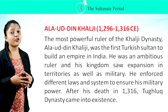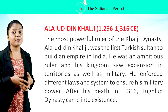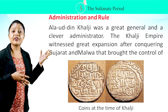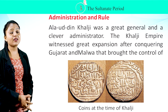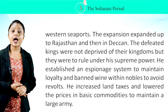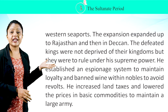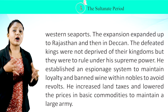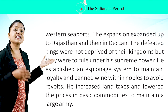Alauddin Khalji imposed different laws and systems to ensure his military power. He died in 1316, after which the Tughlaq Dynasty came into existence. Alauddin Khalji was a great general and a clever administrator. The Khalji Empire witnessed great expansion after conquering Gujarat and Malwa, bringing control of western seaports. The expansion extended to Rajasthan and the Deccan. Defeated kings were not deprived of their kingdoms but ruled under his supreme power. He established an espionage system, banned wine among the nobles to avoid revolts, increased land taxes, and lowered prices of basic commodities to maintain a large army.